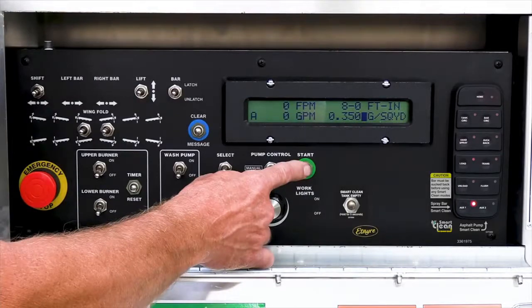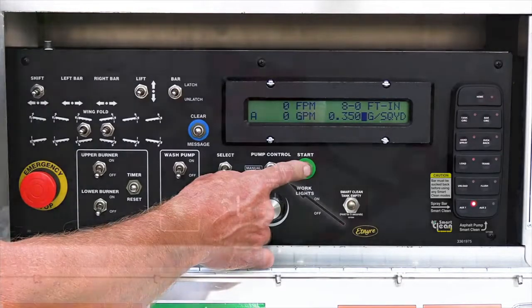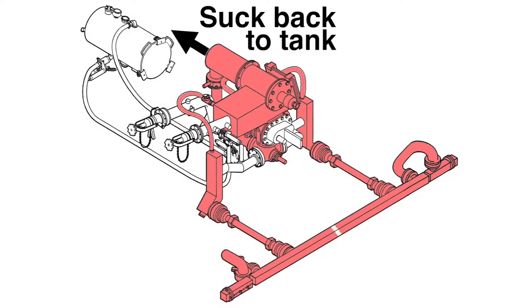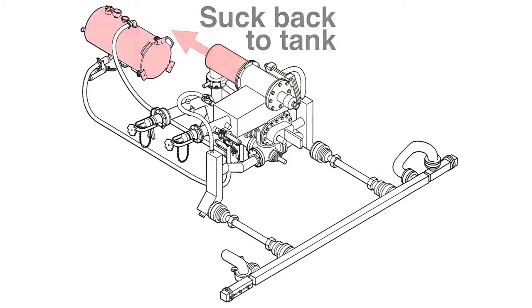The system will engage a standard suck back. After this, the pump will start turning at the preset circulation rate of 50 gallons per minute and the SmartClean cycle will begin.